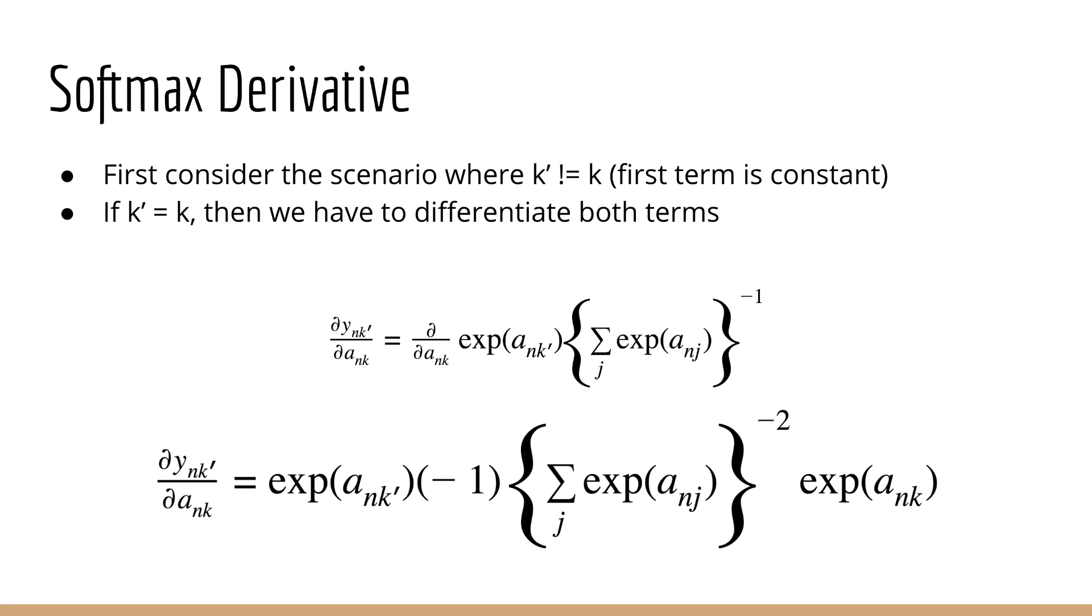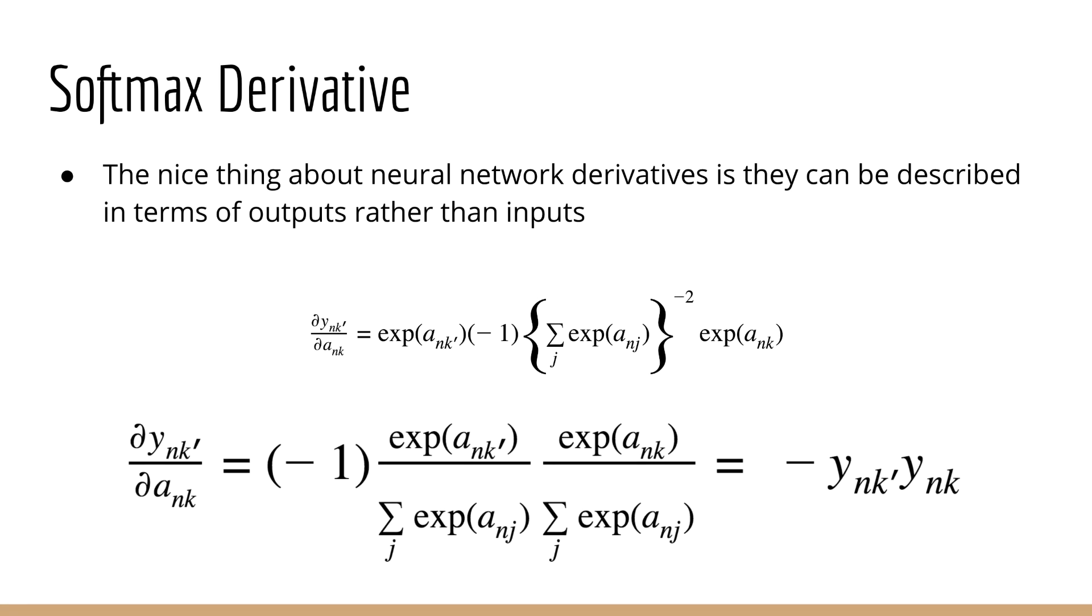One interesting thing about neural network derivatives is that they have convenient expressions in terms of the output variable rather than the input. So we can express y, which is a function of a, in terms of y instead of in terms of a. So if we reorganize the derivative a little bit, you can see that we can express it in terms of two softmaxes multiplied by each other. And this is just a negative of y of nk prime times y of nk.